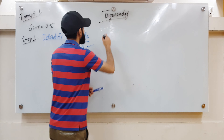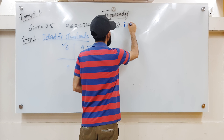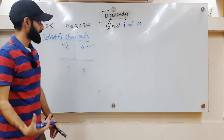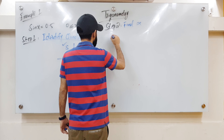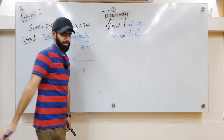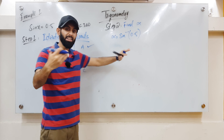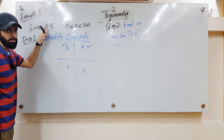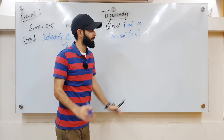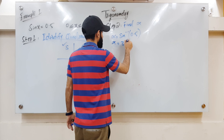Step two: find alpha. To find alpha, you take the inverse sine of the value after the equals sign. Bear in mind that whenever you're finding alpha, you always take the inverse of the positive value — so even if the right-hand side were negative 0.5, you would still take the inverse of positive 0.5. So alpha turns out to be 30 degrees.